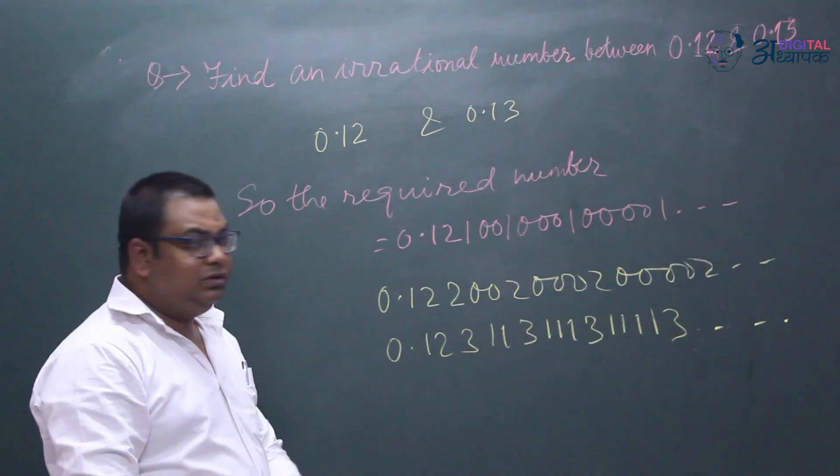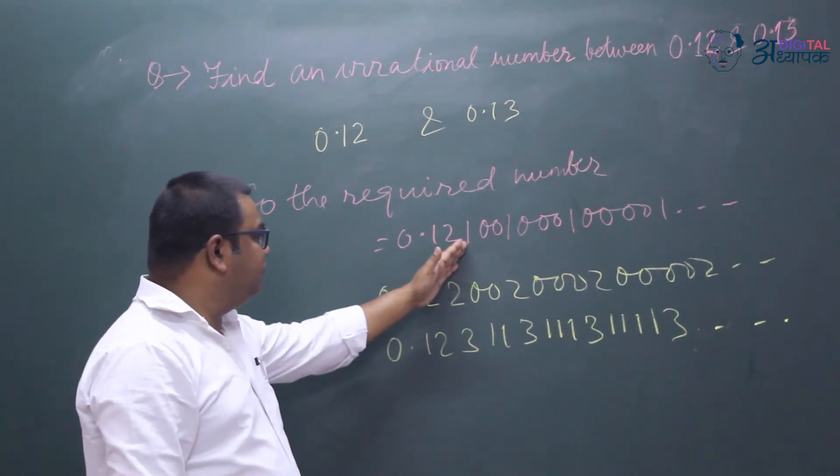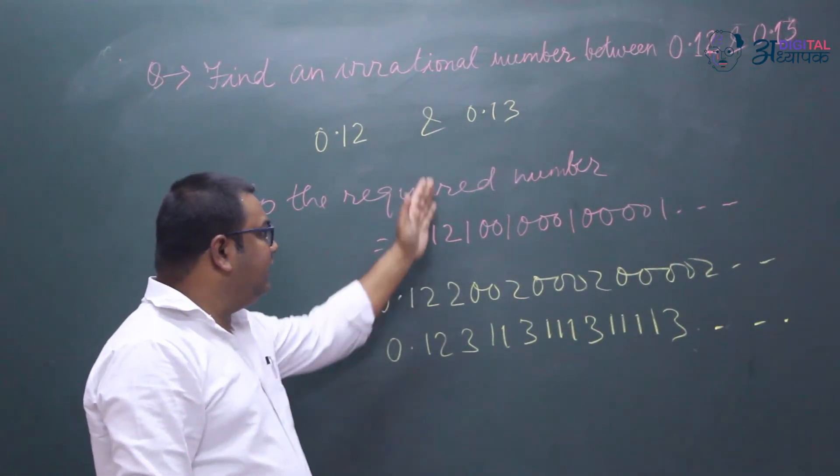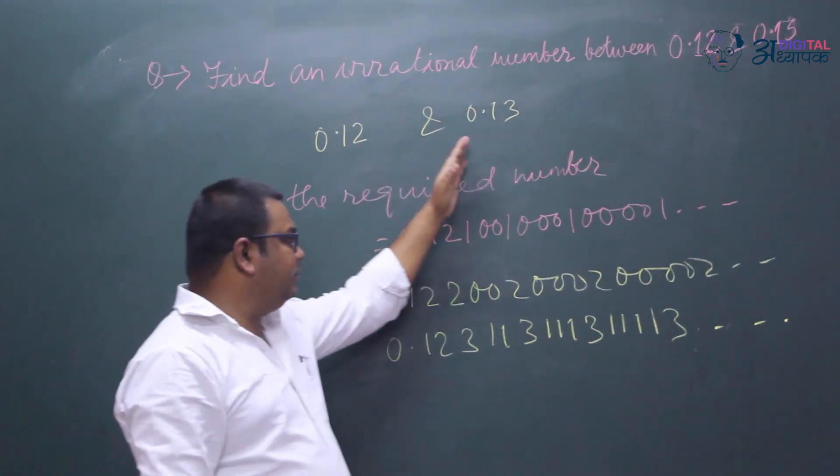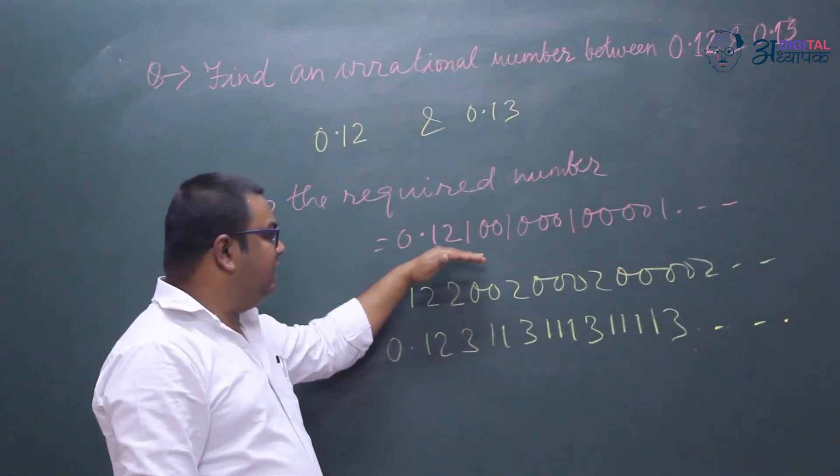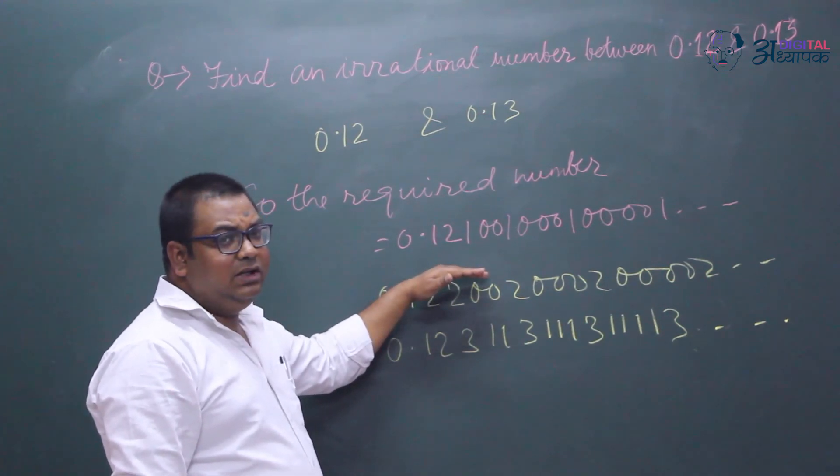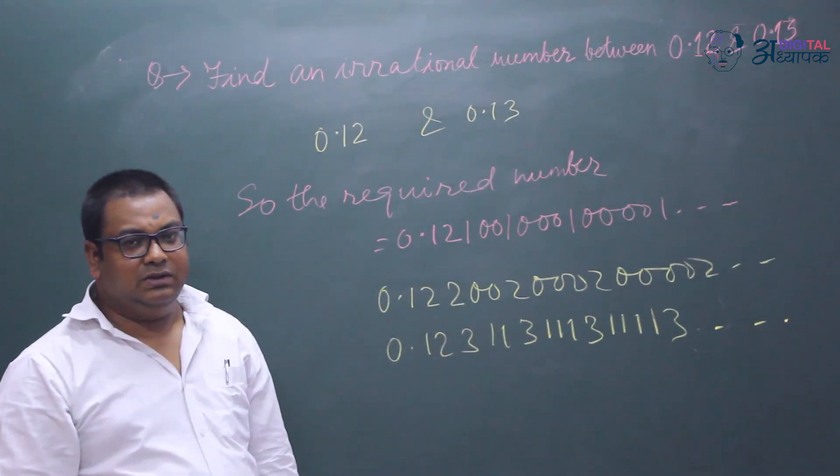The number should exceed 0.12 and should not exceed 0.13. That means it should lie between 0.12 and 0.13 and should be in the form of a non-terminating, non-repeating decimal. Thank you.